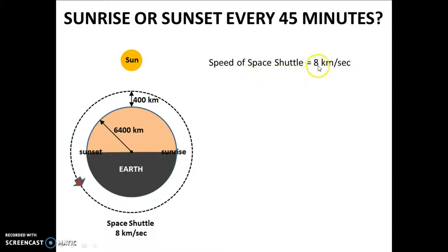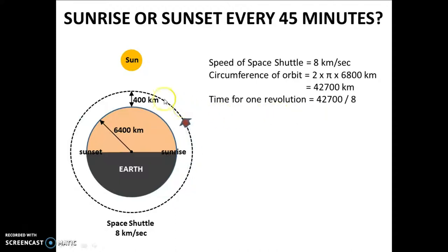Now, the speed of the space shuttle is 8 km per second. The circumference of one revolution is by formula 2 pi r which is equal to 2 pi into 6800 km which is equal to 42700 km. The time taken to complete this one full revolution is given by the formula time is equal to distance upon speed which is 42700 divided by 8 which is equal to 5340 seconds which is almost equal to 89 minutes.